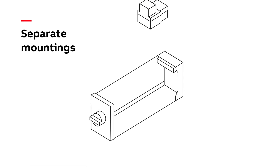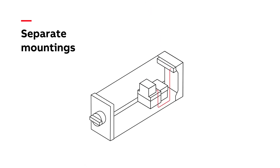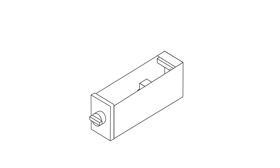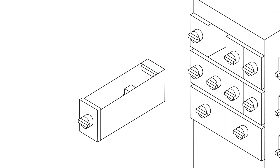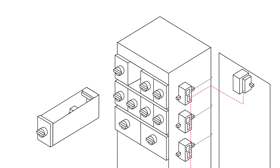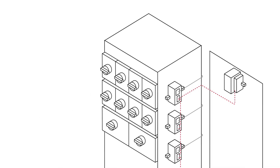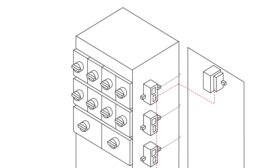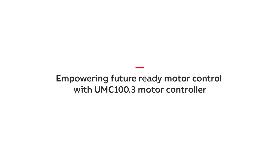The modular design allows separate mounting of communication modules outside the drawer in the cable compartment, benefiting ring topology by avoiding drop lines and enabling fast drawer replacement without communication loss between DCS and communication modules. No configuration of the communication module is needed, and parameterization can be automatically downloaded into the exchanged UMC drawer. Empower your future-ready motor control with the UMC 100.3.